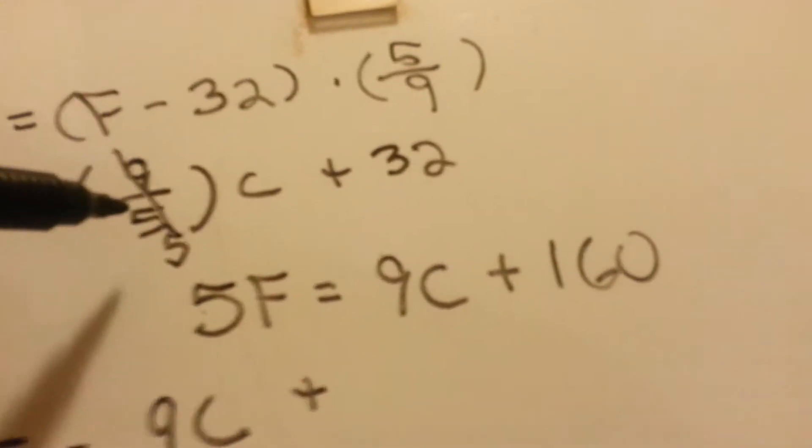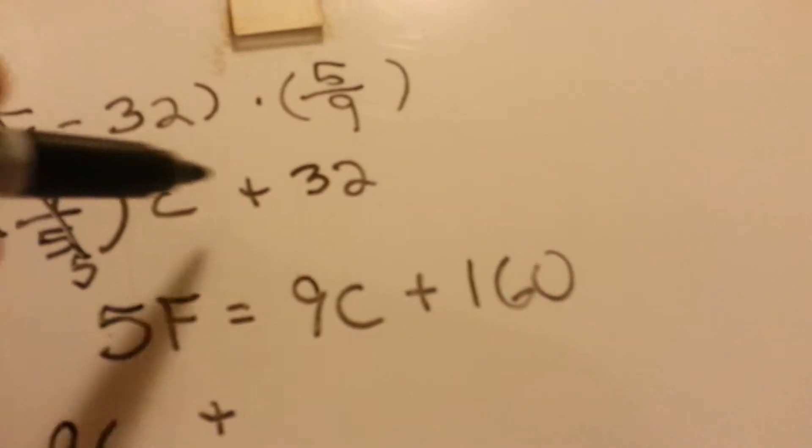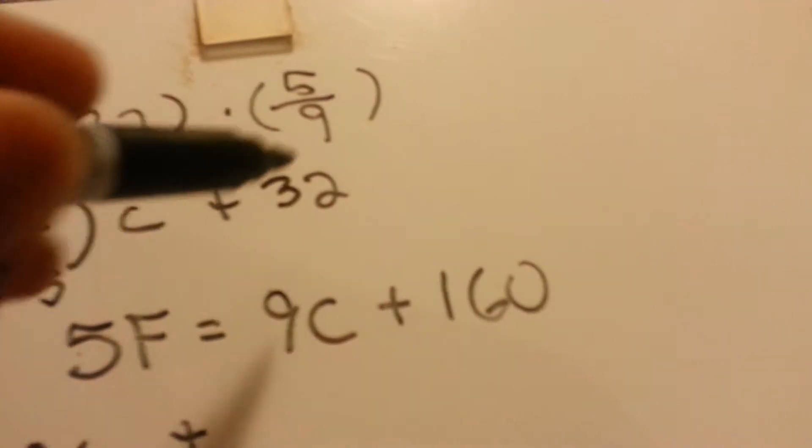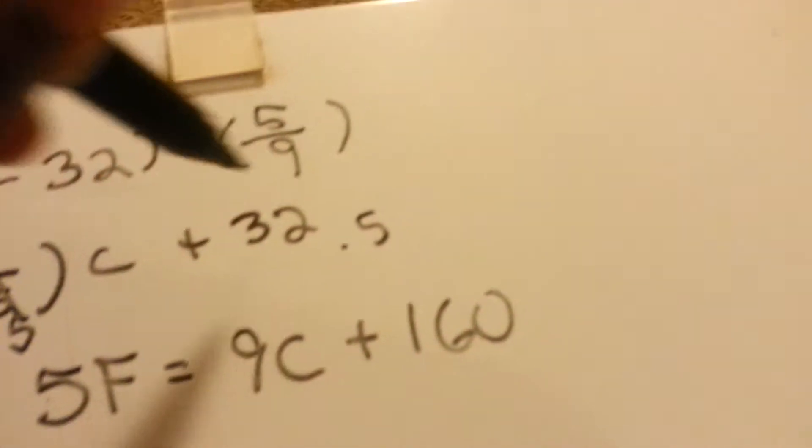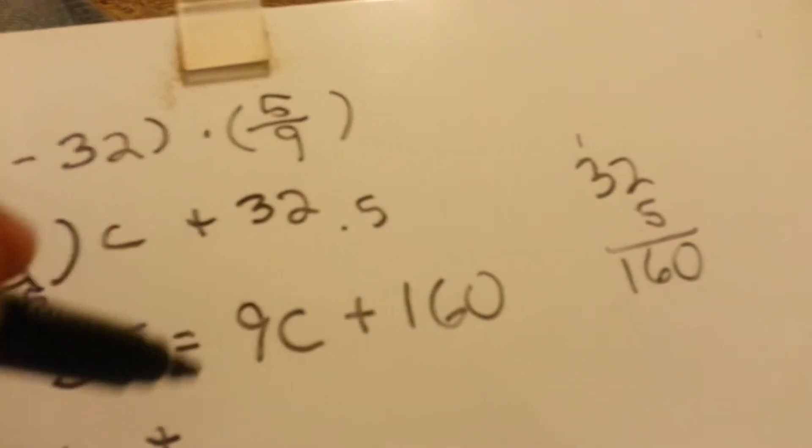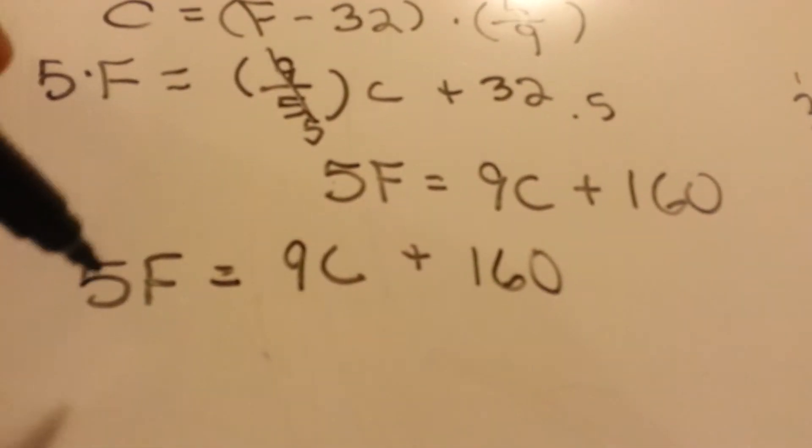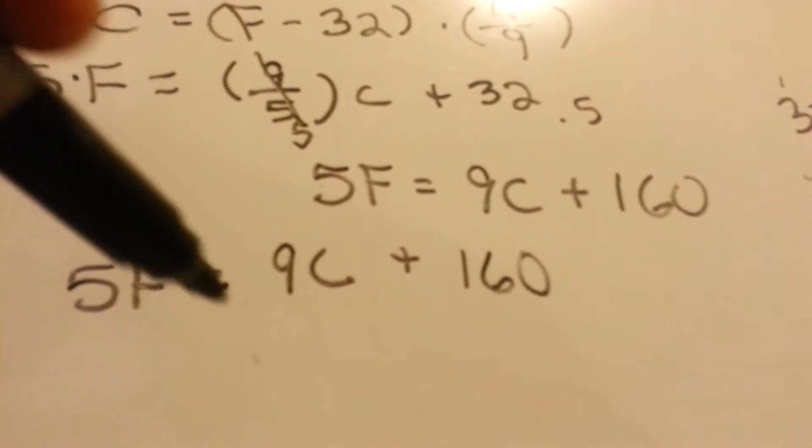and what you did to the one factor here to get rid of that 5, you have to also do to the other factor here. Multiply 32 times 5 as well, and 32 times 5 is 10, 3 times 5 is 15, plus that 1 is 16, that's 160. So that would be 160. So you have 5F equals 9C plus 160.